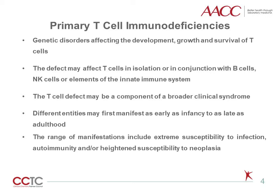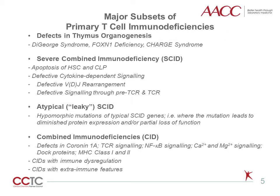They can also be a component of a broader clinical syndrome. The different entities can present at different time points in an individual's life, with some manifesting in early infancy, and others first presenting during adulthood. As is the case for primary immunodeficiencies in general, T-cell immunodeficiencies can have a range of manifestations, from life-threatening susceptibility to infection, to presenting mainly with autoimmune symptoms and or susceptibility to neoplasia.